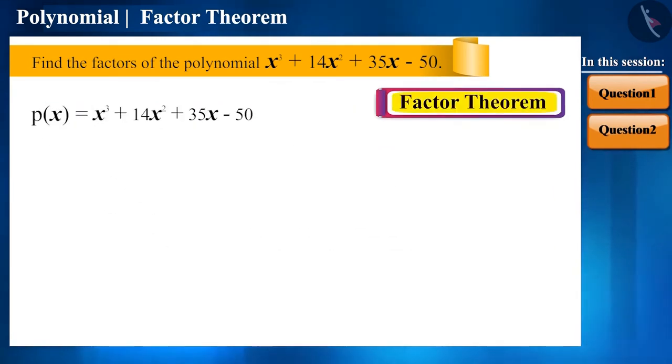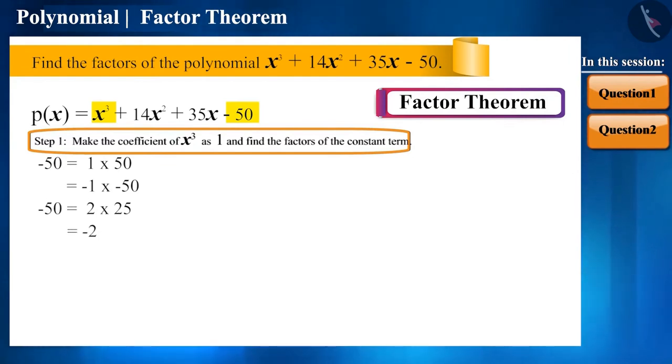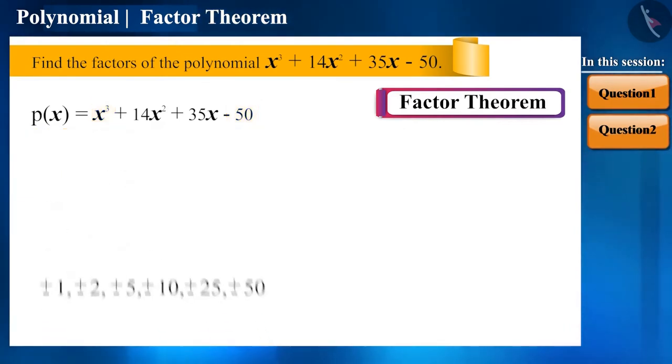Therefore, we will solve this polynomial using the factorization method. The first step is to make the coefficient of x³ equal to 1 and find the factors of the constant term. Here, the coefficient of x³ is 1, which means we have to find the factors of minus 50. And this is quite easy. We just have to make a list of those numbers with which minus 50 is completely divisible and some of those possible values can be.